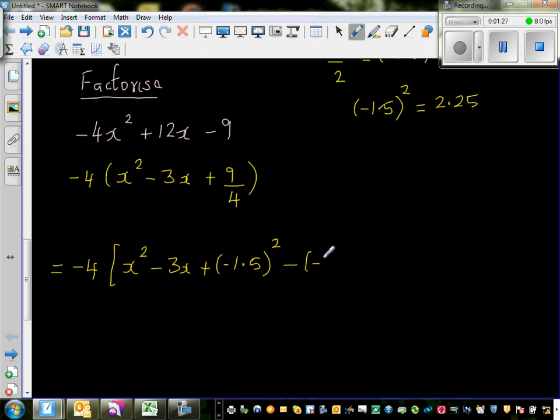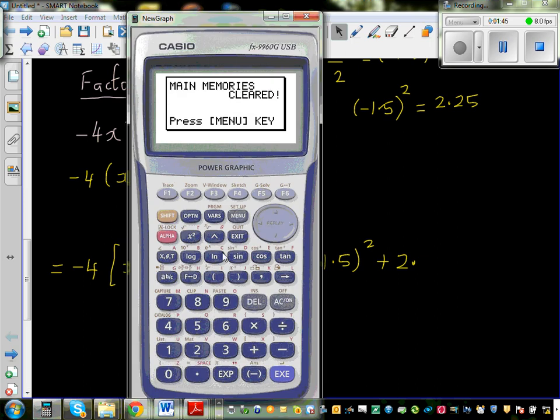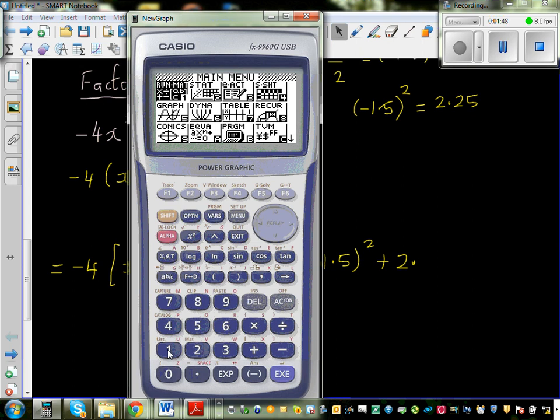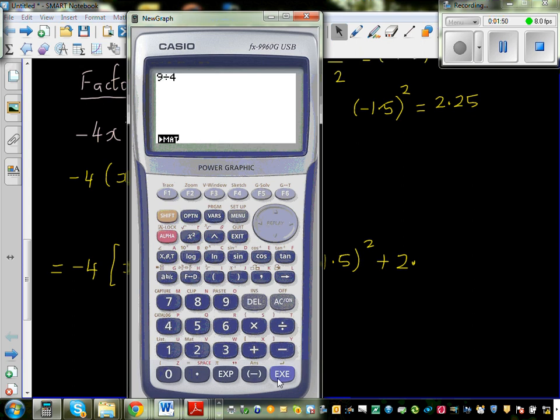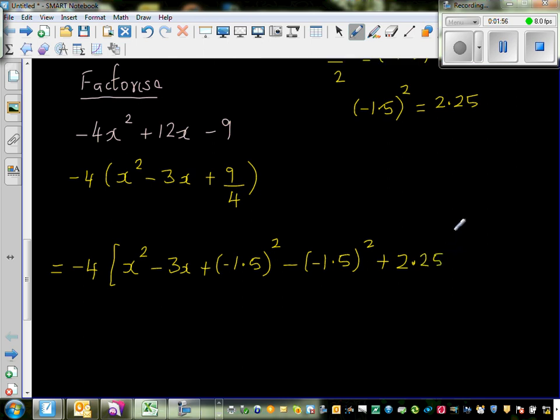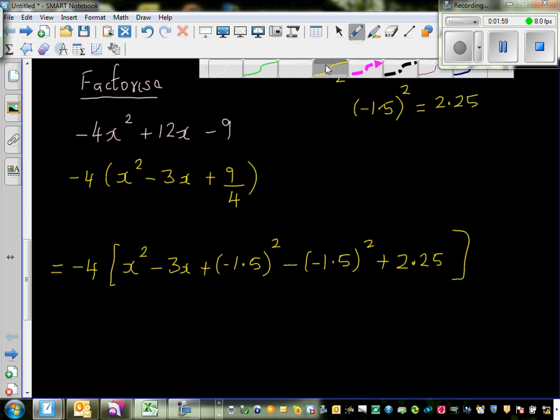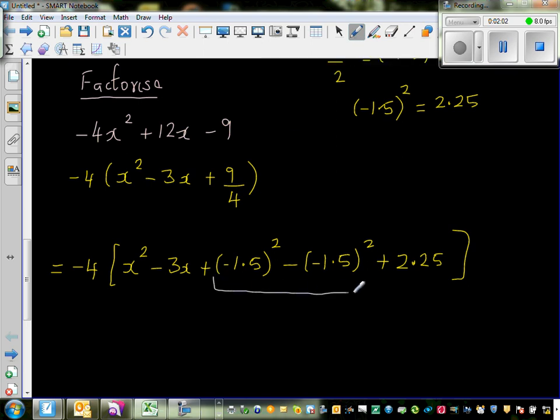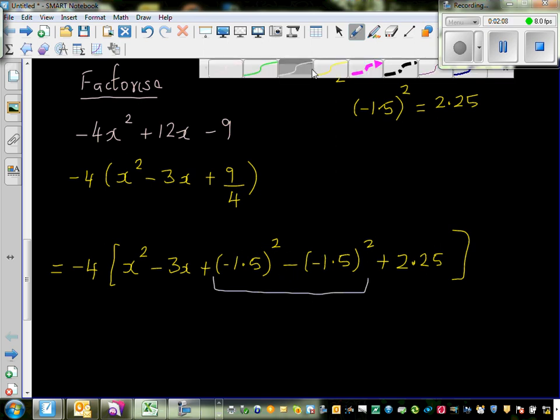Then you take away (-1.5)², and this 9/4 is plus 2.25. What we have done is we have added this and taken away that.